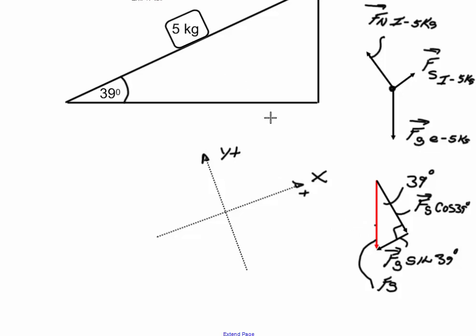Now I'm ready to draw my tilted free body diagram. I'll draw this vector coming straight down like that. I'm going to draw my dot in red right in the middle. I'm going to label this vector — it's going to be the force of gravity y-component, and it's going to be 5 kg × 9.8 m/s² × cosine of 39. I'll grab my calculator: 5 × 9.8 × cosine of 39 gives me a value of 38.08 Newtons.